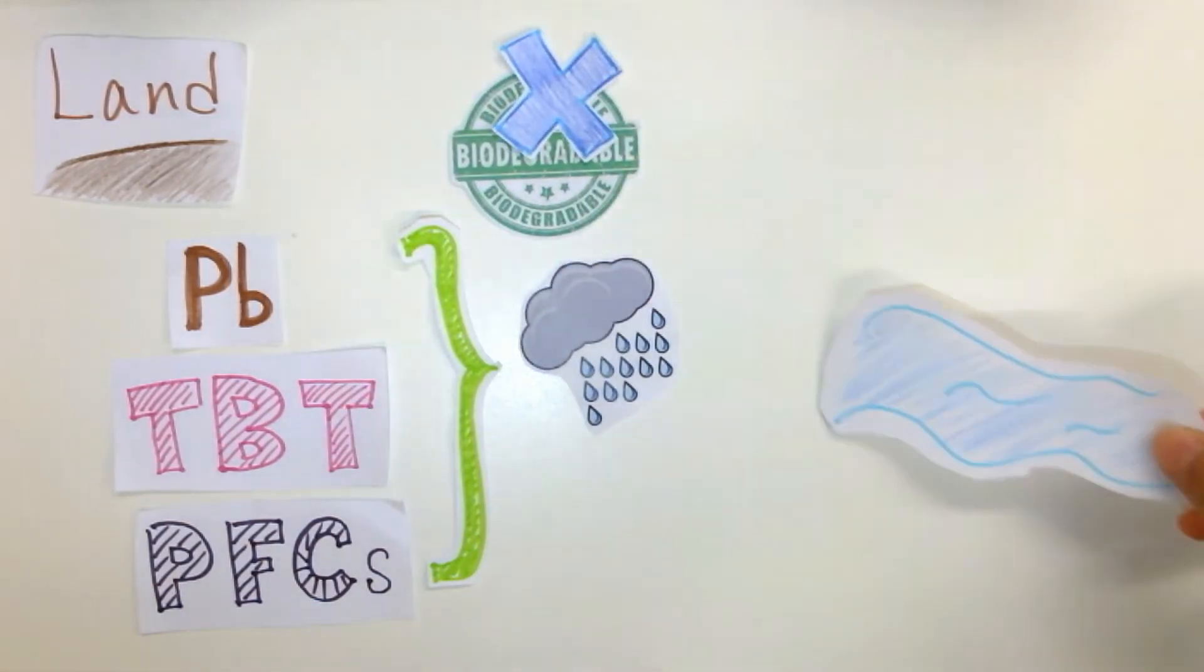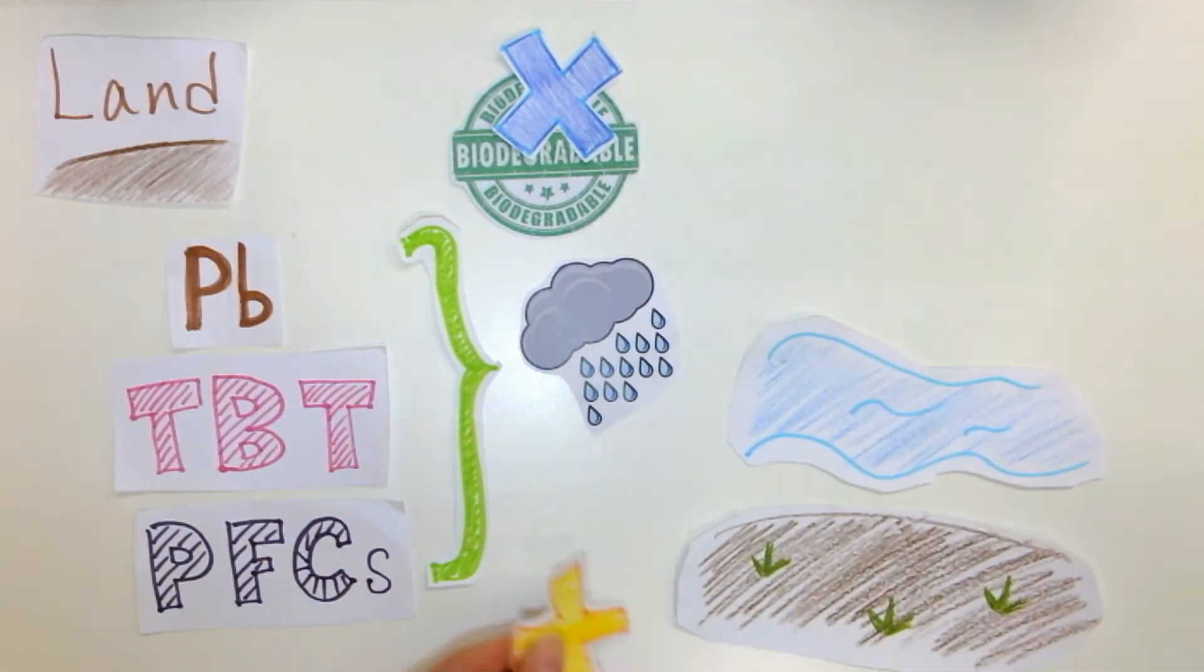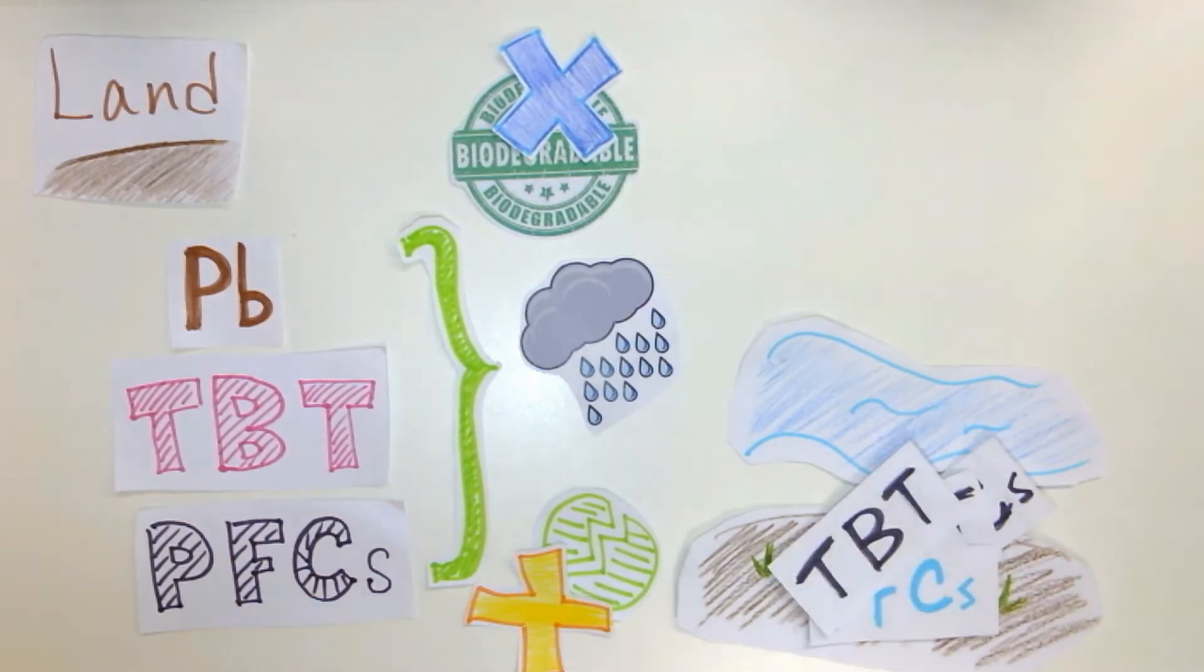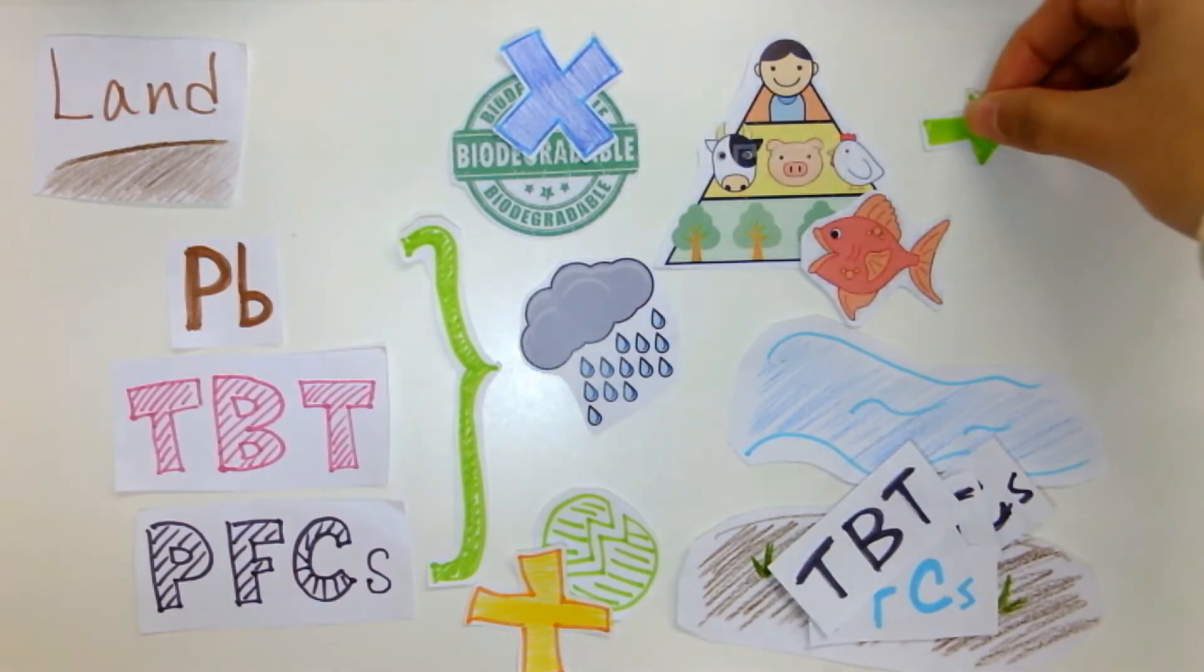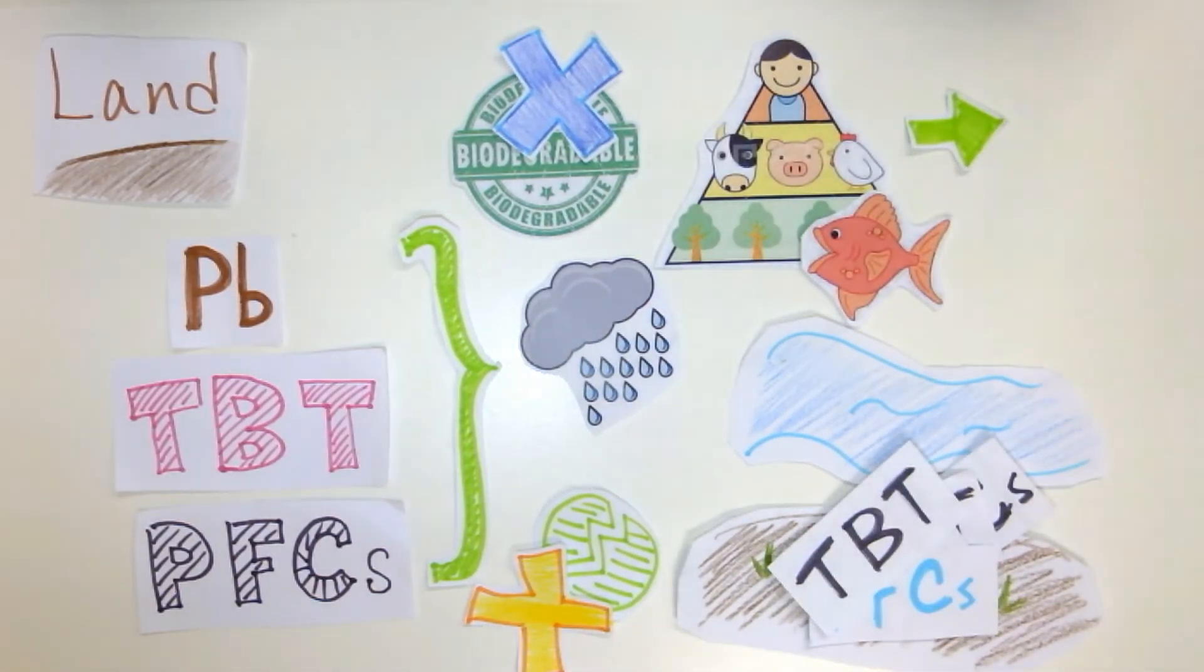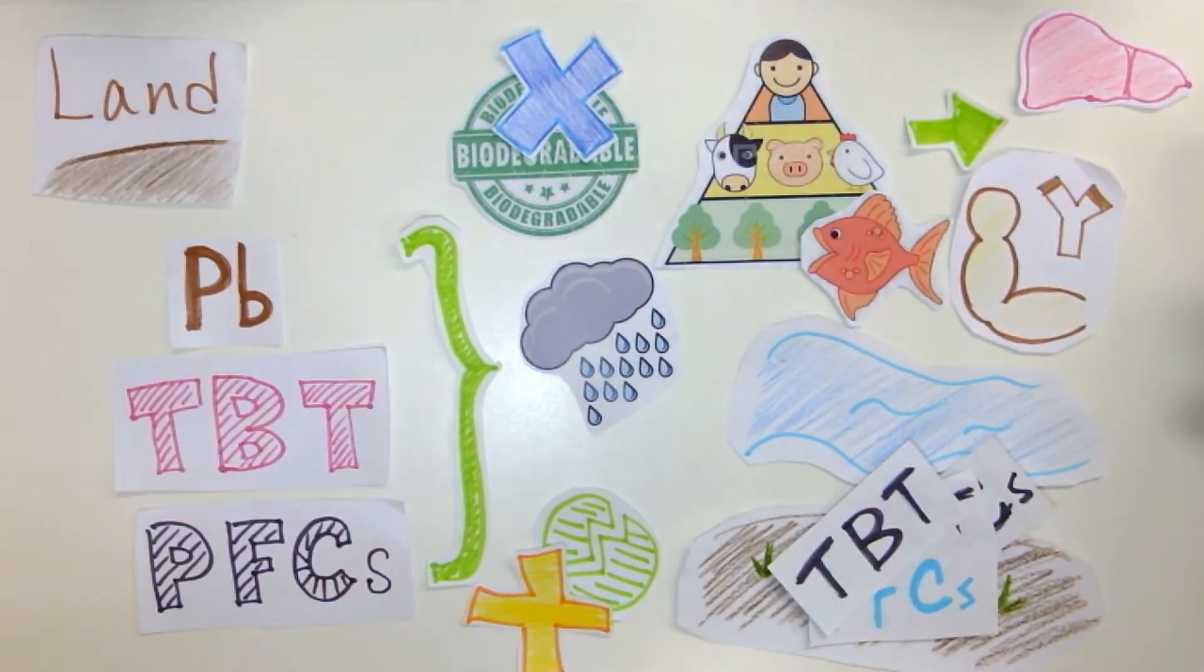When there is rain, these particles will be washed into river and soil. However, they are difficult to break down and accumulate in the environment. Organisms get these toxins from the food chain, affecting their liver, immune, and reproduction systems.